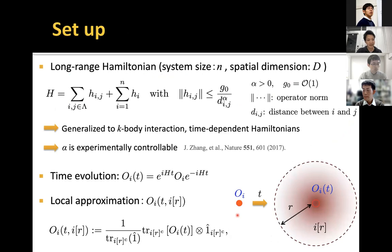Now I will show the setup of our work. The system size is small n and the spatial dimension is large d. For simplicity, I consider the time-independent Hamiltonian with two-body interactions. Each of the interactions decays polynomially with the distance. The decay rate is characterized by the exponent alpha. This Hamiltonian can be generalized to arbitrary k-body interacting Hamiltonians and time-dependent Hamiltonians. This class of Hamiltonian can be experimentally realized using, for example, a cold atom setup, where the exponent alpha can be controllable to some extent.